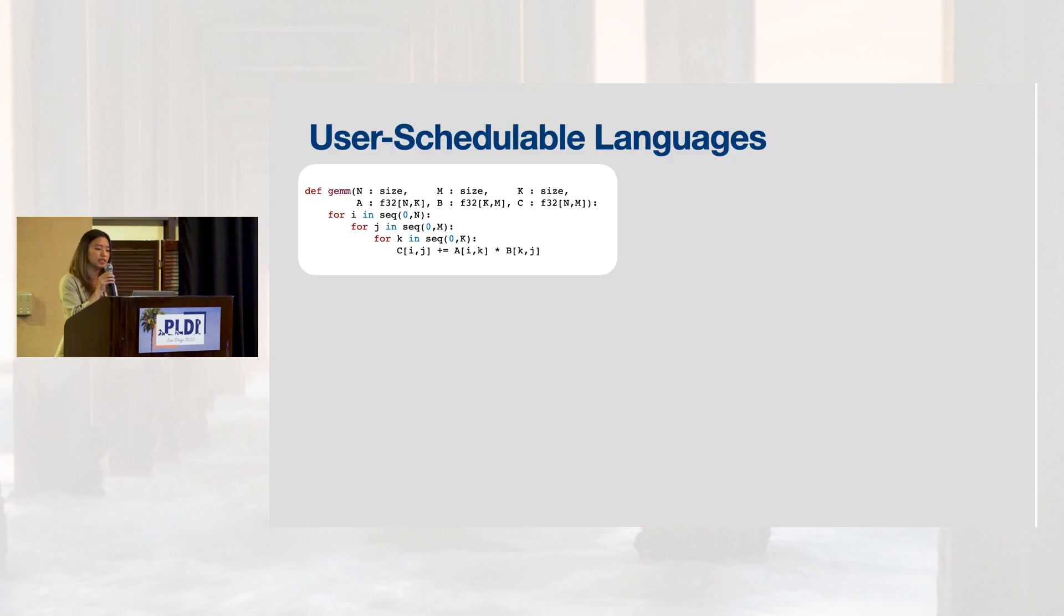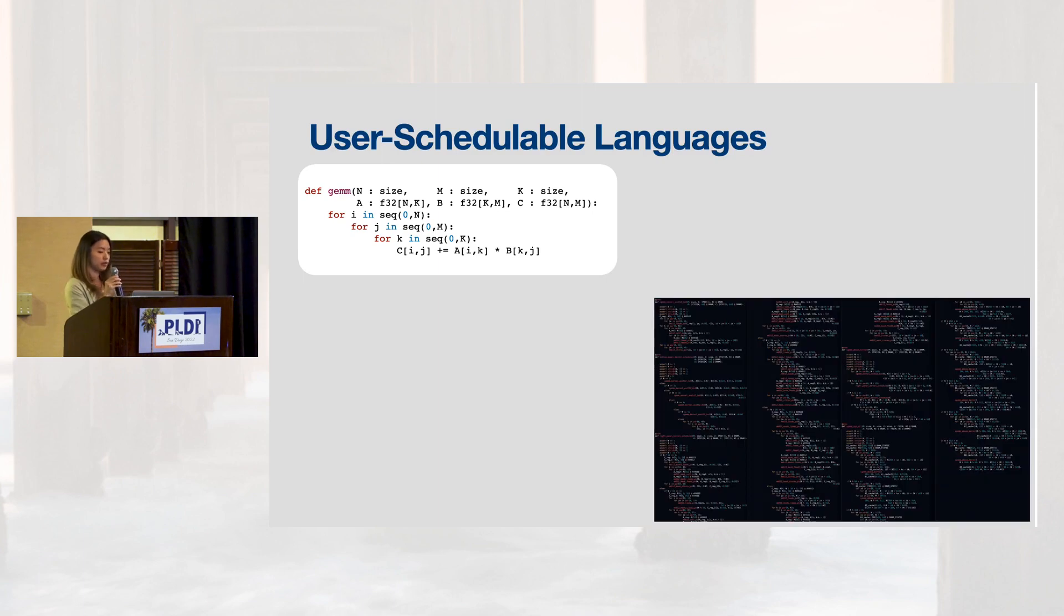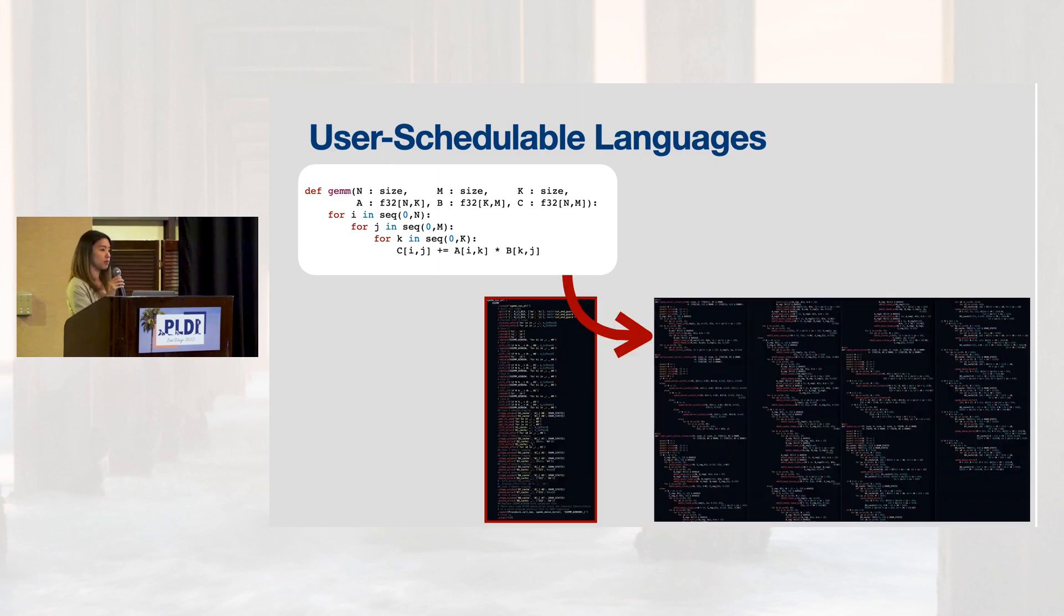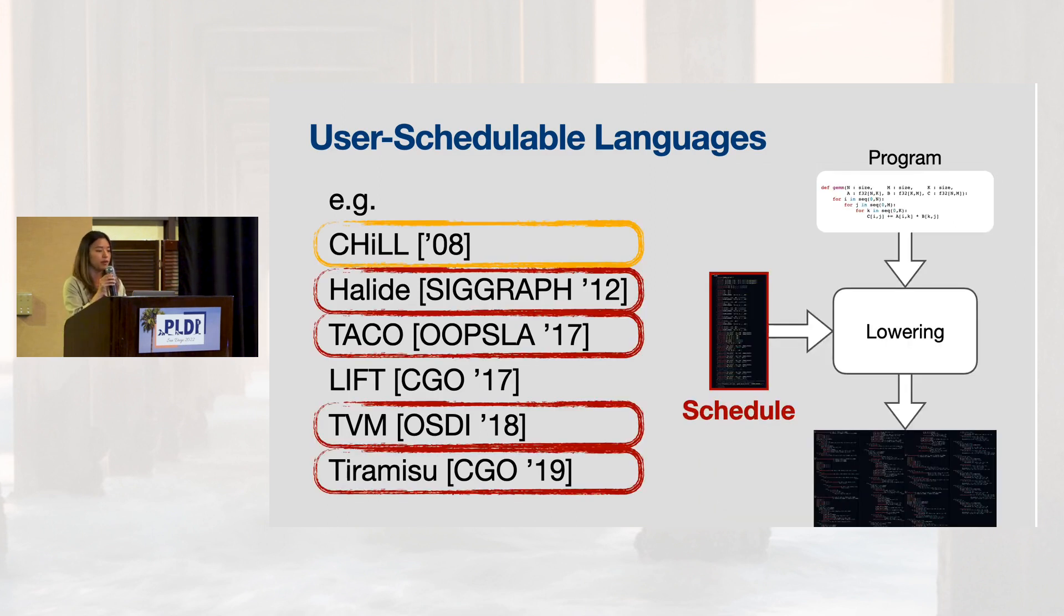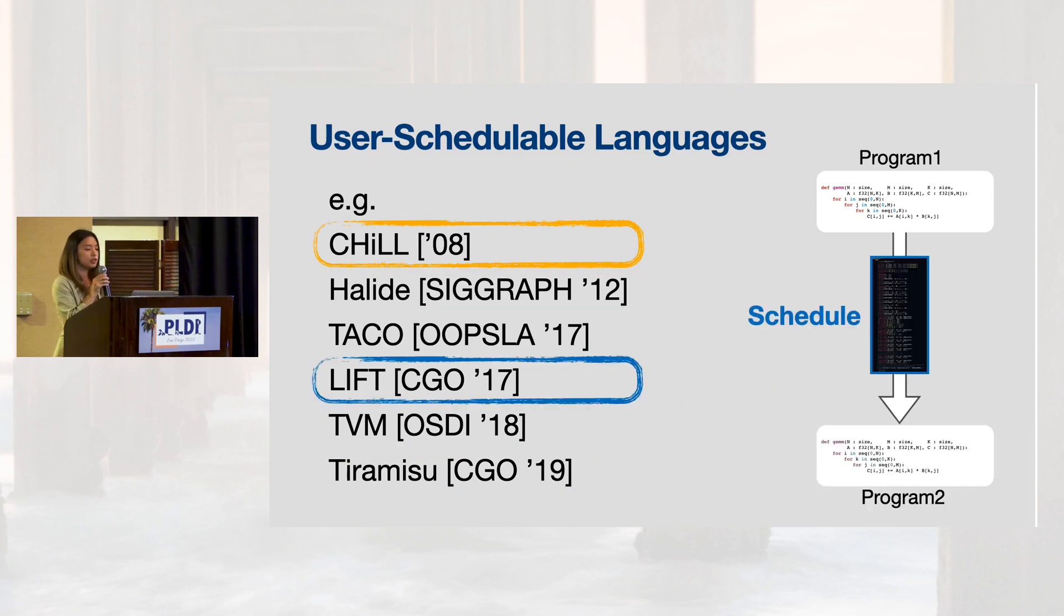With user scheduling, we want to write this simple code and end up with this optimized code by supplying a supplemental metaprogram that we call a schedule. This idea called user-schedulable languages became popular over the last decade as a way of writing high-performance code. Many of these systems treat scheduling as a way of parameterizing the lowering process. Instead, EXO uses a less common but simple idea of scheduling as rewriting within a single IR.